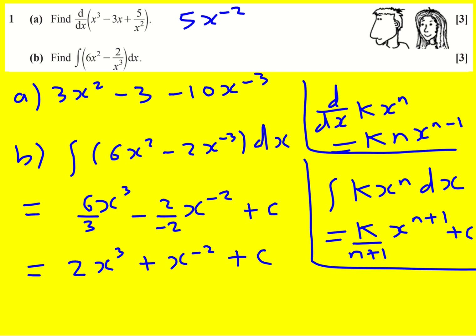For this integration, it's good practice to check and differentiate back. Bring the power down, we'll get 6x squared—that's all good. Here we'll bring the power down, we get minus 2x to the minus three. That also works. Brilliant.